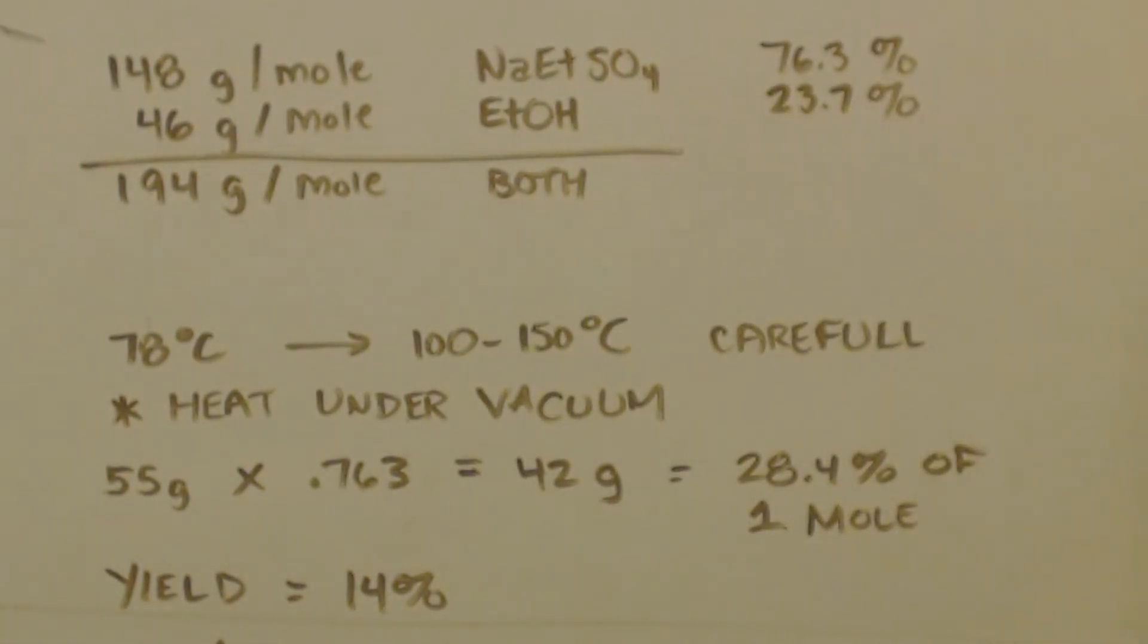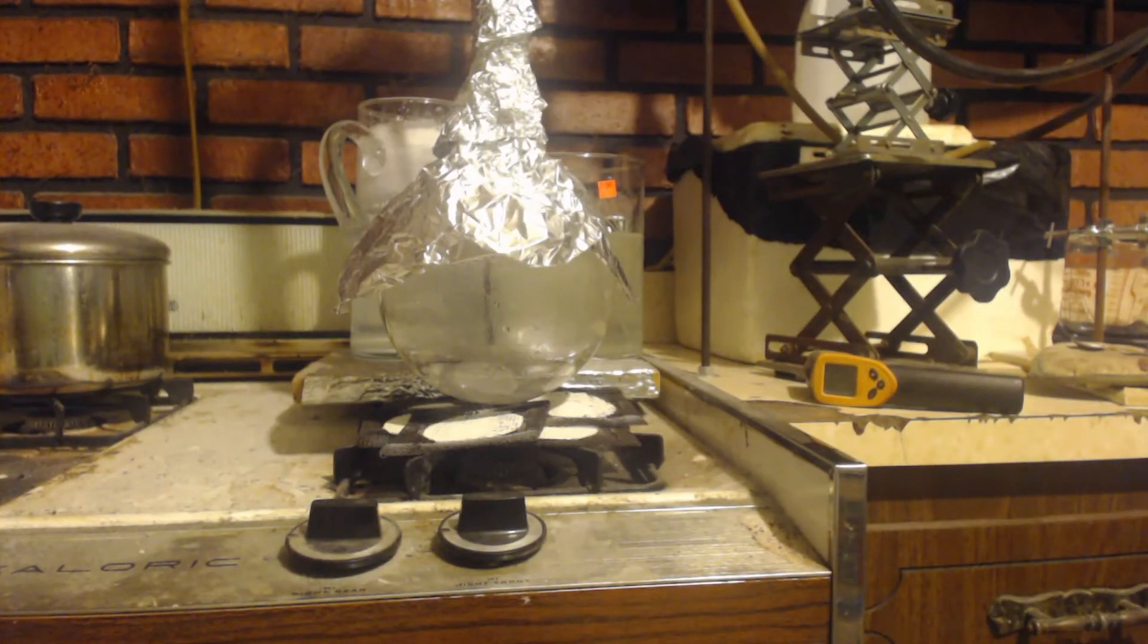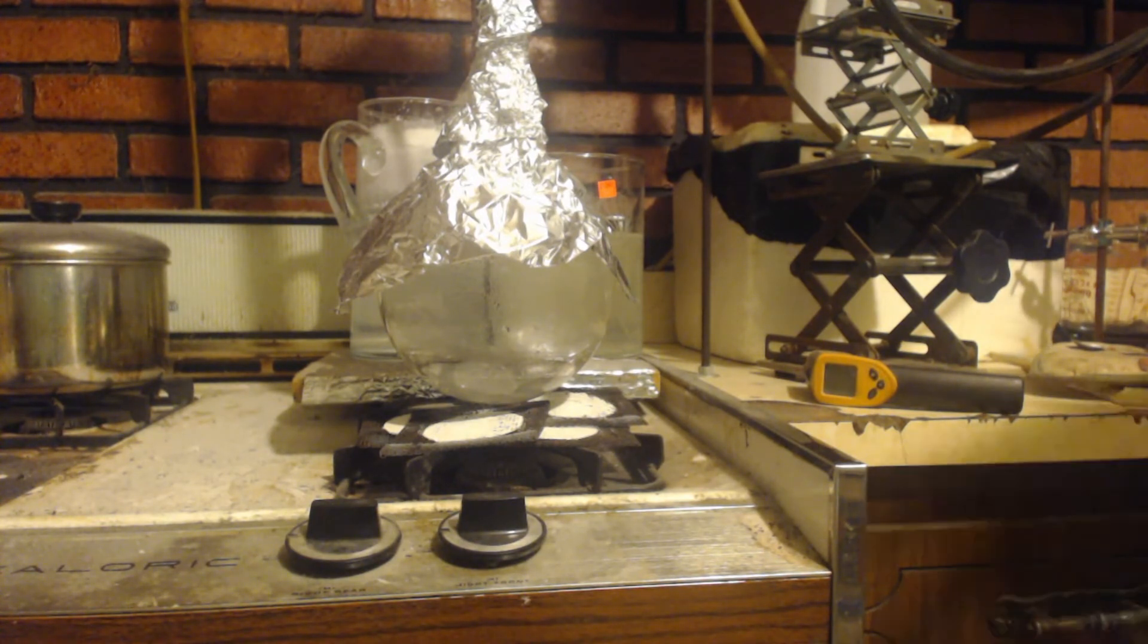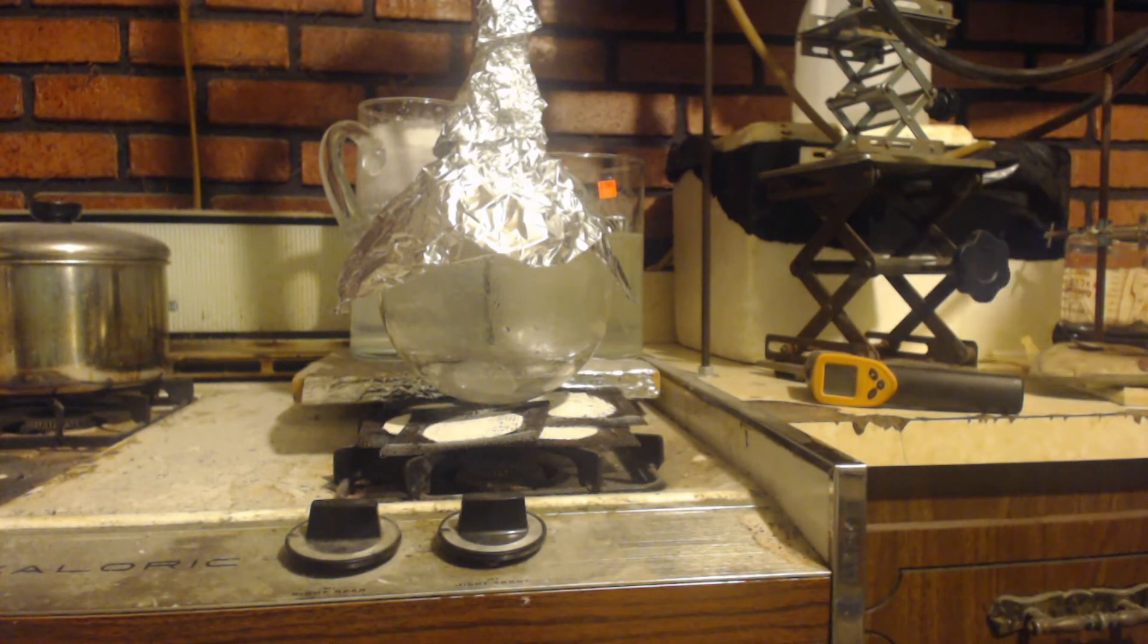But if you don't start with anhydrous chemicals in the beginning, like I did not, okay, I used the sulfuric acid straight out of the bottle. I only used as-is ethanol. I didn't dry it out completely. And I didn't remove the water. The very first step where we added ethanol and sulfuric acid together to make ethyl sulfonic acid, we had to reflux it. And when I refluxed it, I didn't remove any of the water like you're supposed to do when you're doing a Fischer esterification.